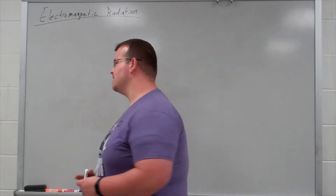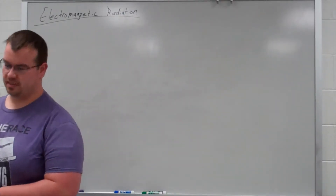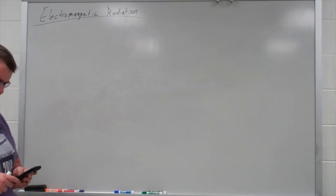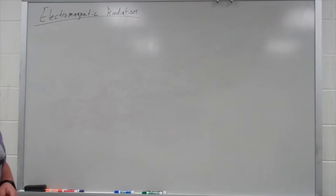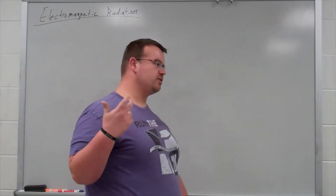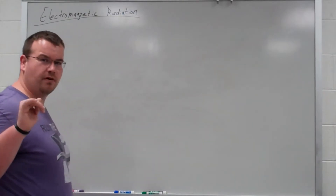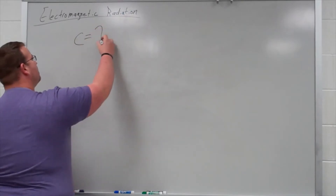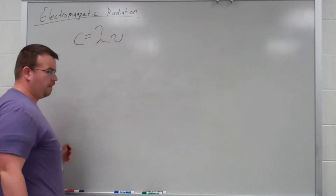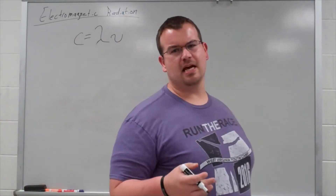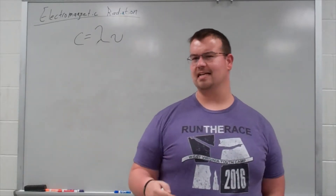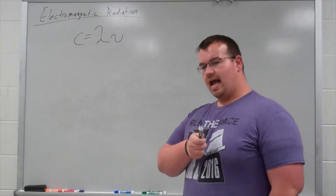The first thing I want to talk about is this last formula I told you we were going to discuss. In this last formula — it's super, super important. The first light equation, and that's what we're going to refer to these two as: the first light equation we covered was the speed of light equals wavelength times frequency. We went over that in some detail, and we broke down what that constant C was — 2.98 times 10 to the 8 meters per second.